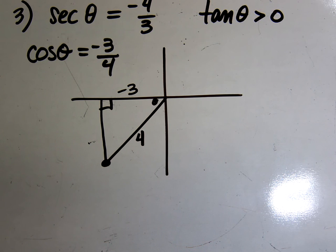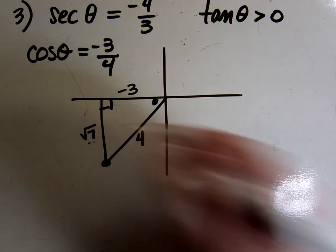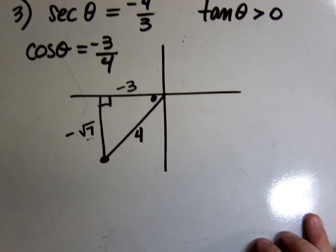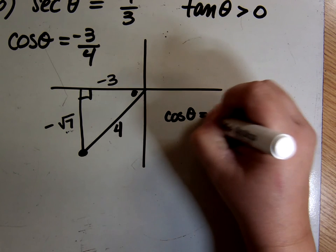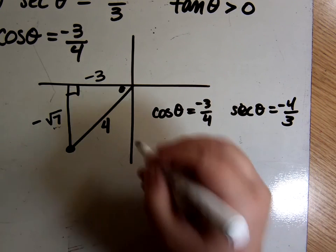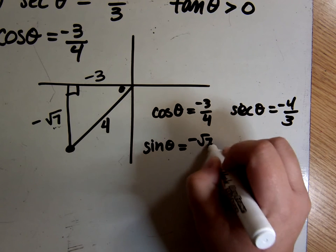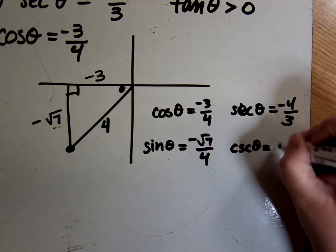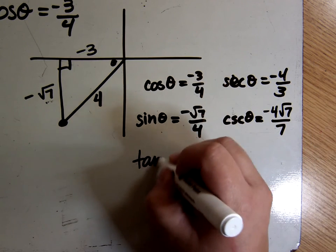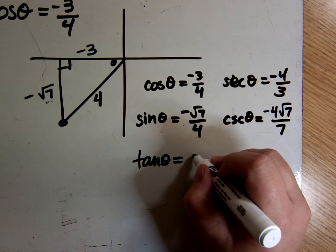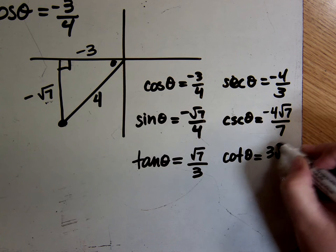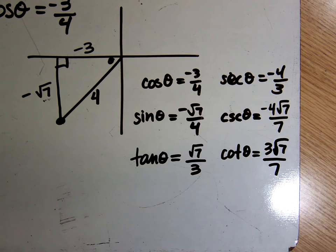Using the Pythagorean theorem: 4 squared minus 3 squared is 16 minus 9 equals 7, so the opposite side is square root of 7. In the third quadrant everything is negative except the hypotenuse, so it's negative square root of 7. Cosine is negative 3 over 4 and secant is negative 4 over 3 as given. Sine is negative square root of 7 over 4; cosecant is negative 4 root 7 over 7. Tangent is negative root 7 over negative 3, which simplifies to root 7 over 3; cotangent is 3 root 7 over 7.